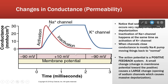We see this in the membrane potential: we go from minus 90 all the way up to plus 10, and then as potassium starts to dominate the conductance, the membrane potential goes back down to minus 90. This is an example of a positive feedback system.